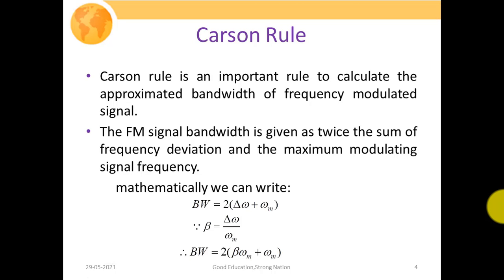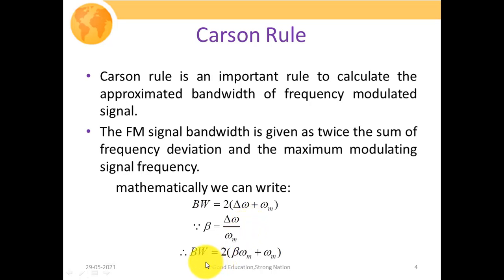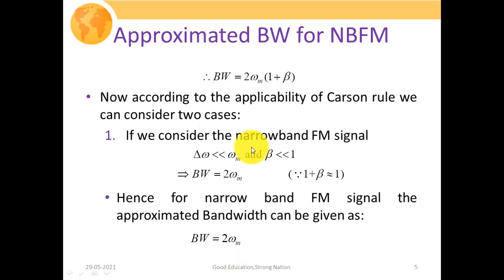So bandwidth would be given as Δω over ωm. Since beta, the modulation index for a frequency modulated signal, is given as Δω over ωm, this can be rewritten as bandwidth equal to twice of (β·ωm + ωm). Therefore bandwidth is equal to twice of ωm times (1 + β), where β is the modulation index of the frequency modulated signal.